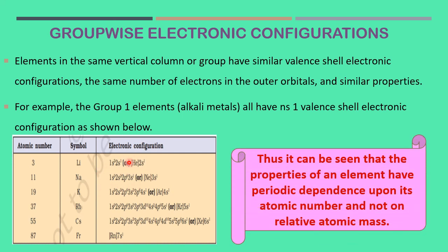Thus it can be seen that the properties of an element have periodic dependence upon its atomic number and not on relative atomic mass. Modern periodic table depends on the atomic number because atomic number is most important than the atomic mass. Thank you. Tomorrow we will discuss some other concept.